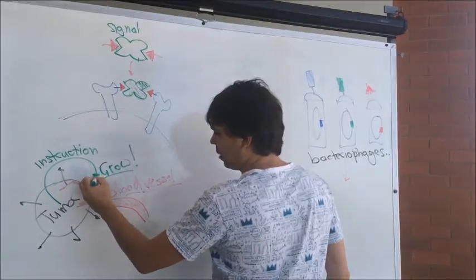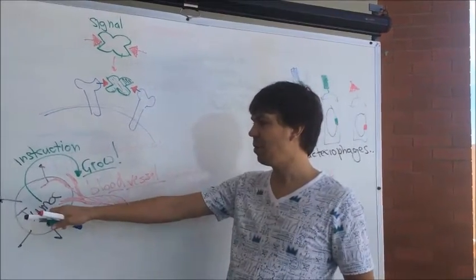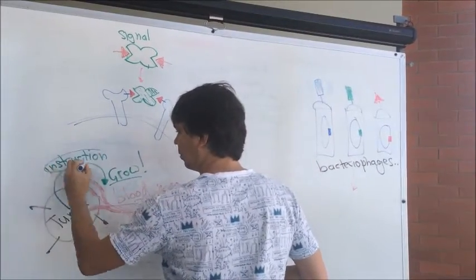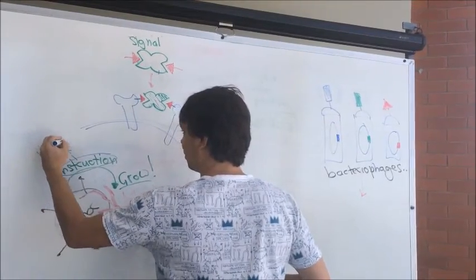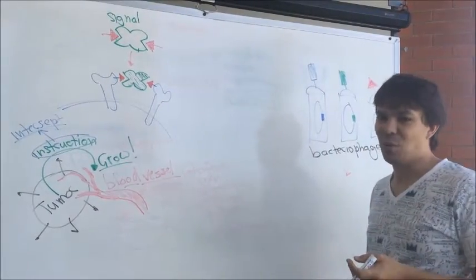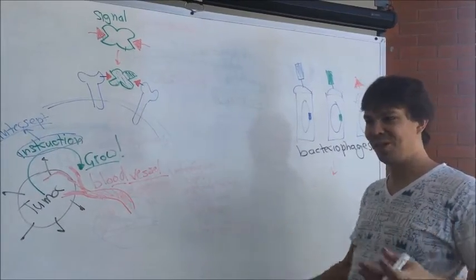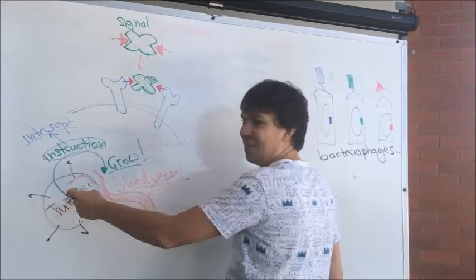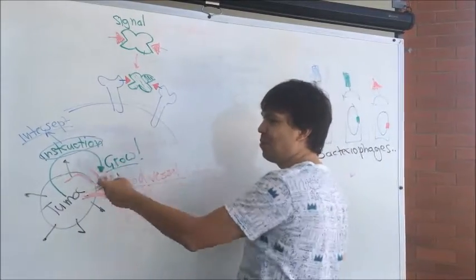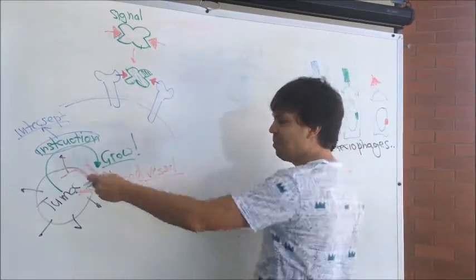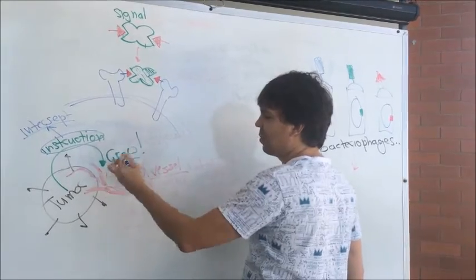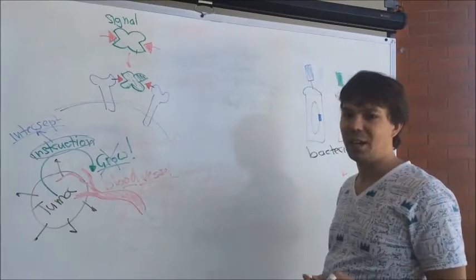And one of the strategies to preventing tumor growth is intercepting this instruction. And it's like any warfare - you shut down the communication in your enemy camp. If the troops are telling their supply officers that we need more provisions, we need more food, but if you intercept that message, the tumor tries to send the command but it never reaches the blood vessel, so the blood vessel actually doesn't grow and then the tumor eventually dies.